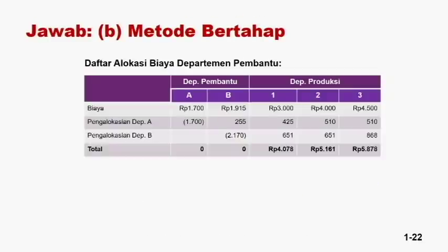Rekapitulasi metode bertahap: awalnya A=1.700, B=1.915, produksi 1=3.000, produksi 2=4.000, produksi 3=4.500. Secara bertahap A dialokasikan ke B, 1, 2, 3; kemudian total B (2.170) dialokasikan ke 1, 2, 3. Setelah pengalokasian, departemen A dan B nilainya 0. Departemen 1 mendapatkan 4.078, departemen 2 mendapat 5.161, dan departemen 3 mendapat 5.878. Ini metode yang kedua.